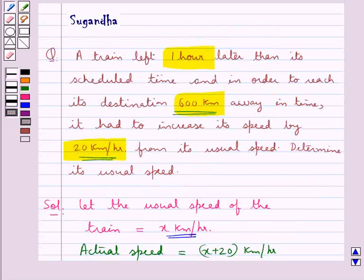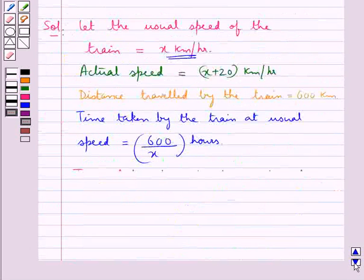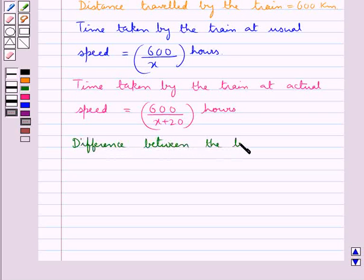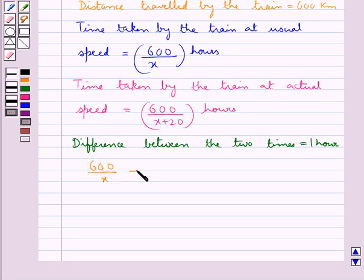In the question we have that the train left 1 hour later than its scheduled time. So the difference between the two times is equal to 1 hour, or: 600 upon x minus 600 upon x plus 20 is equal to 1.